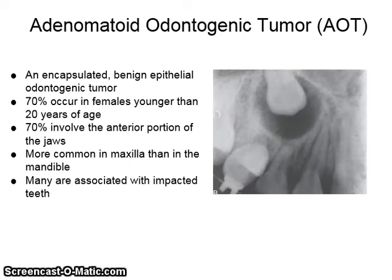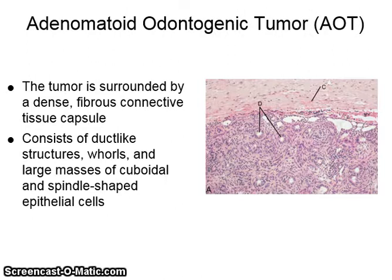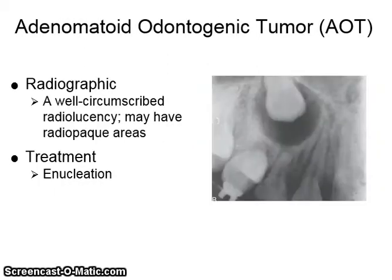Adenomatoid odontogenic tumor is an encapsulated benign epithelial odontogenic tumor. Seventy percent occur in females younger than 20 years of age, and 70% involve the anterior portion of the jaws. It is more common in the maxilla than in the mandible, and many are associated with impacted teeth. Microscopically, it is surrounded by a dense fibrous connective tissue capsule and consists of duct-like structures, whorls, and large masses of cuboidal and spindle-shaped epithelial cells. Radiographically, it shows as a well-circumscribed radiolucency that may have some radiopaque areas. It is treated by enucleation.